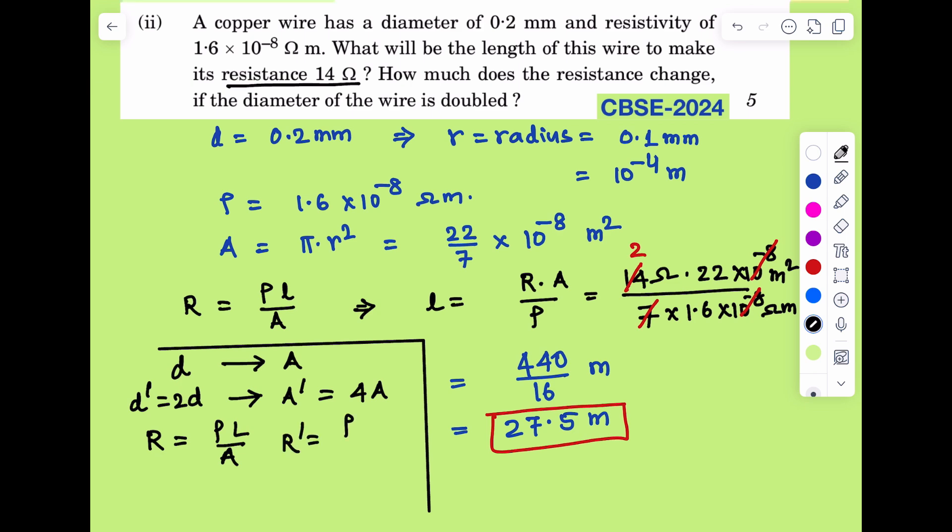Now R dash, keeping the material same, rho into L dash by A dash. Length is also same, so R dash is equal to rho L divided by 4A. And L dash is equal to L. That means we can write it as rho L by 4A, which is equal to R by 4.